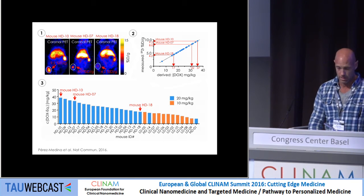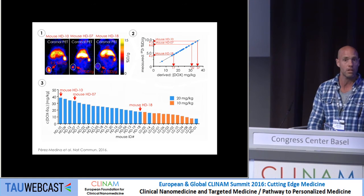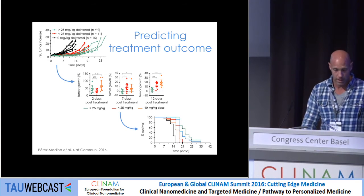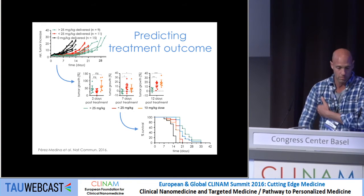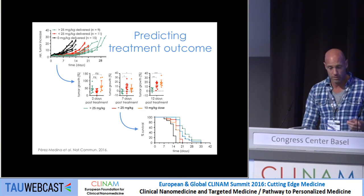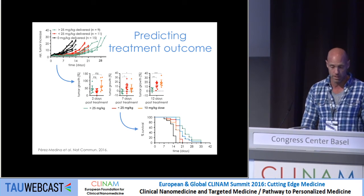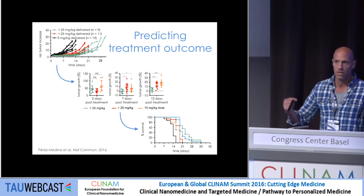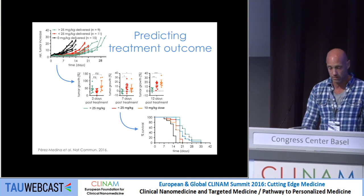We derived the actual quantity of doxorubicin accumulated in the tumor on an individual basis for all mice. We subdivided mice that had more than 25 mg/kg doxorubicin accumulated versus less. Looking at relative tumor growth, the nanoreporter predicts which animals will perform well compared to those with less accumulation. This also translates into prolonged survival.